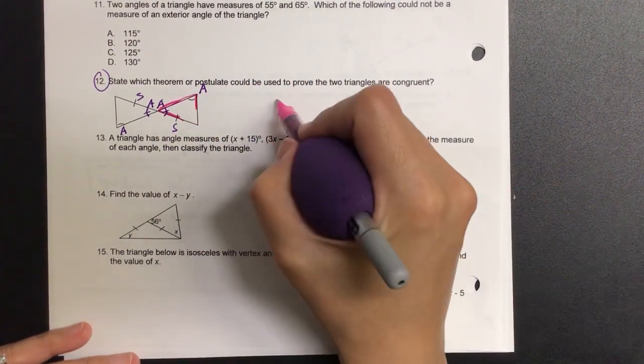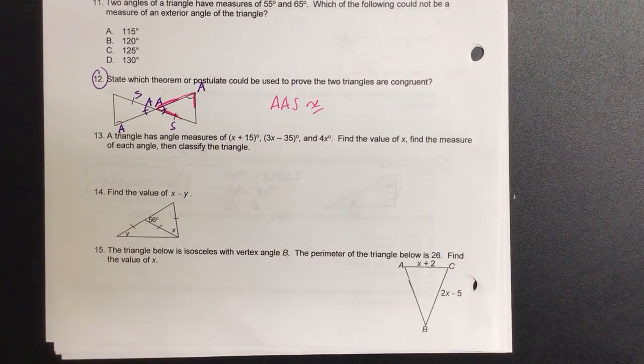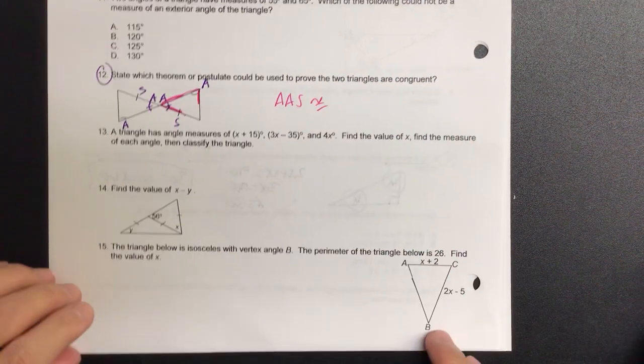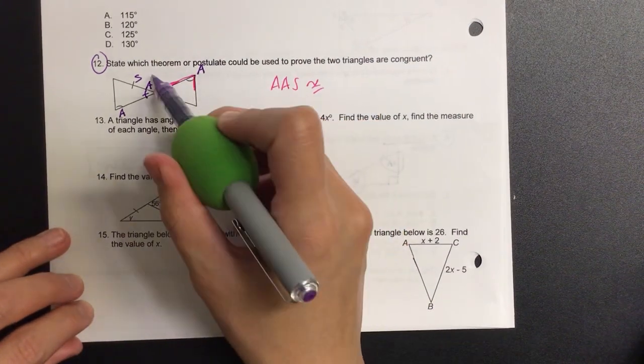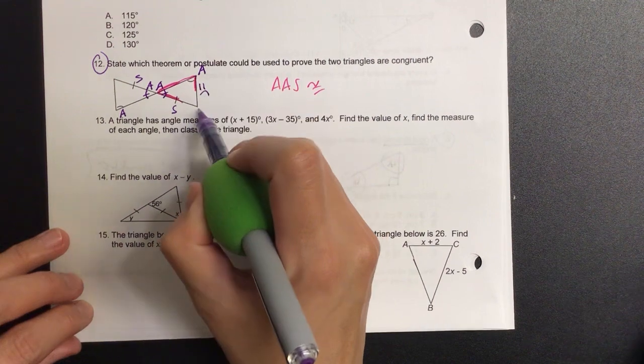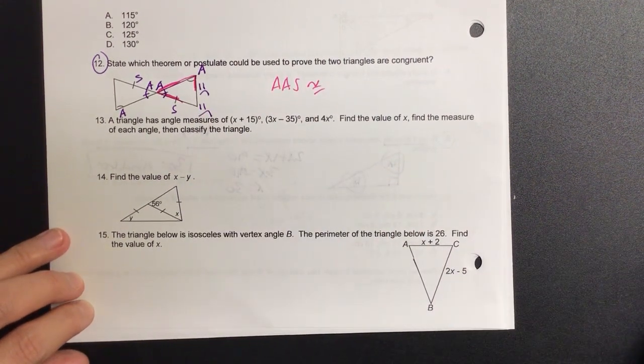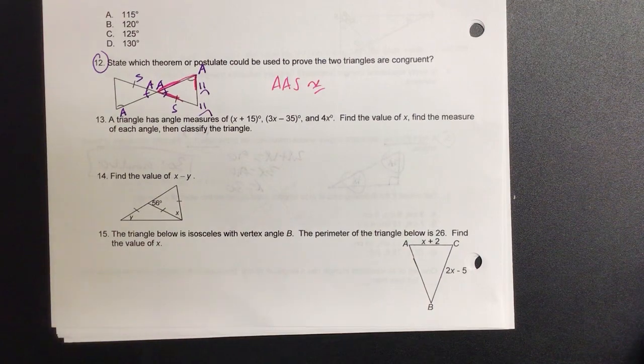So it says which theorem or postulate, angle, angle, side congruence. That's a good reminder. Can I say angle, side angle? No. No, because then I'm skipping a side, and I'm skipping an angle. How many are you allowed to skip? One. Just one. Okay? So that was unit four.